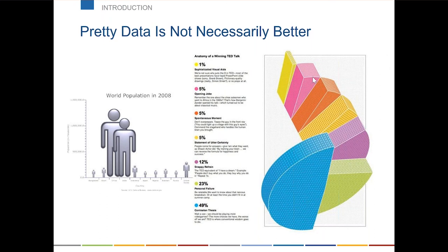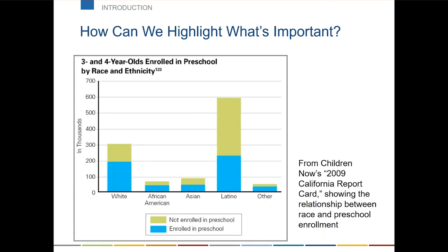On the right we've got essentially a pie chart that's been blown out to attempt to present the pie slices better. But this is impossible to read. What's the difference between the size of the pink, orange, yellow, and purple? In fact, the purple is twice as big as all those other three — impossible to know. This one is pretty, even trippy, but that does not make it good.